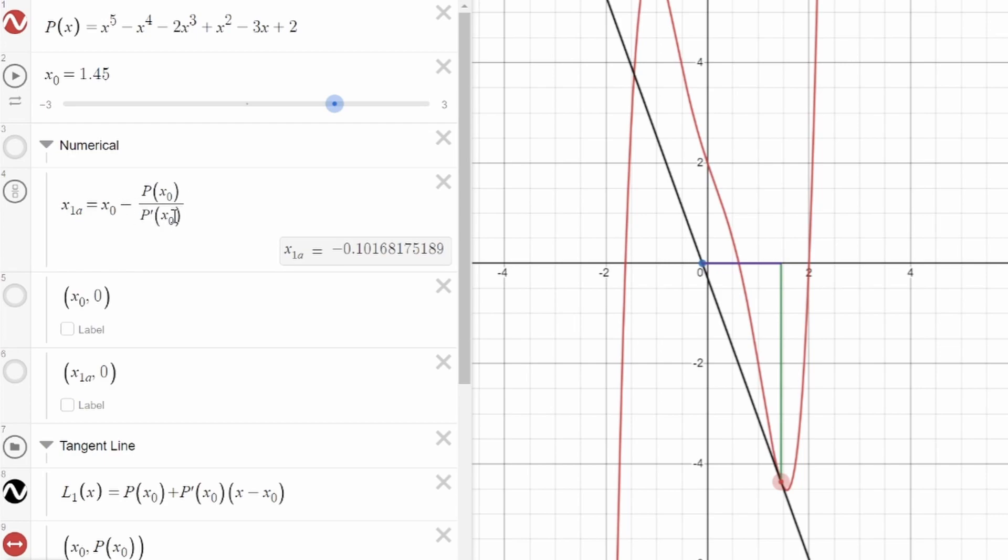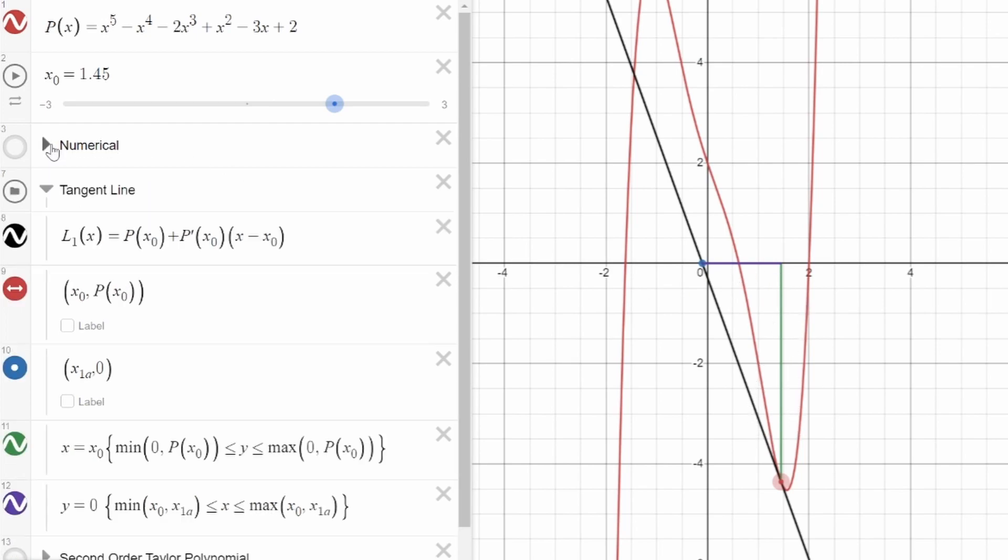The traditional way of deriving this formula is by using a geometric argument, comparing the lengths of this line of the triangle to this line of the triangle. What I want to do instead is use the Taylor polynomial of this tangent line. You can see that this is the equation of the tangent line, as you would get from using Taylor's formula.